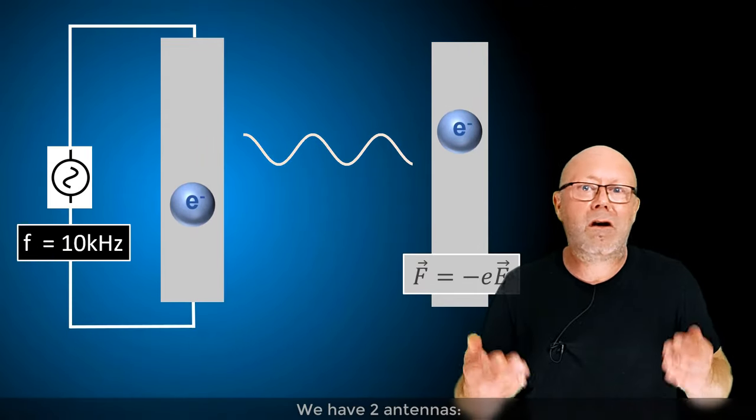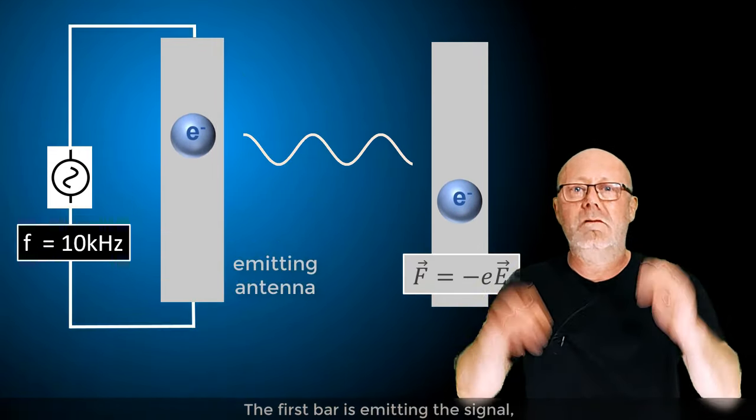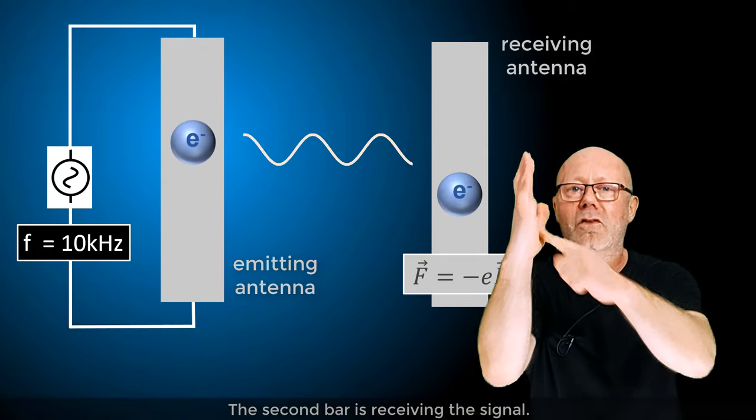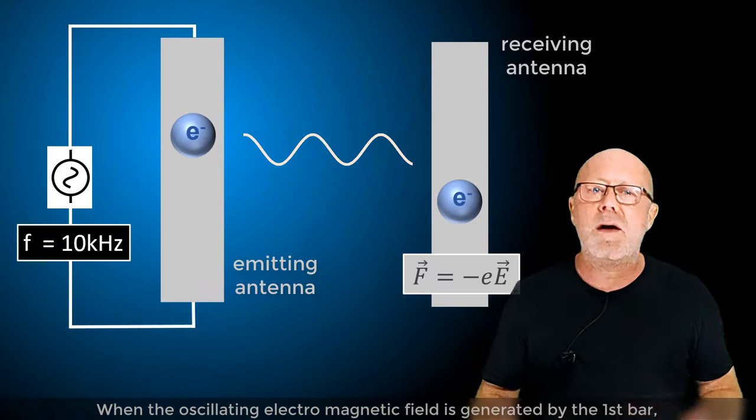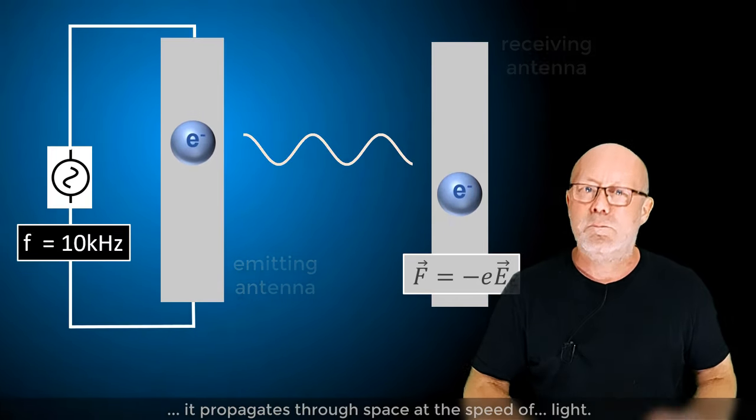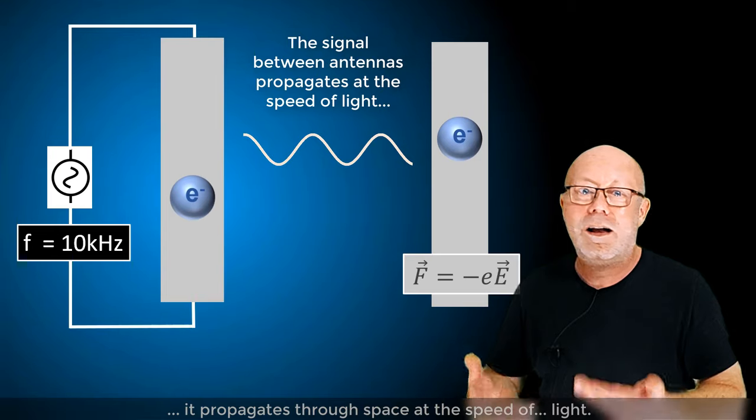We have two antennas. The first bar is emitting the signal. The second bar is receiving the signal. When the oscillating electromagnetic field is generated by the first bar, it propagates through space at the speed of light.